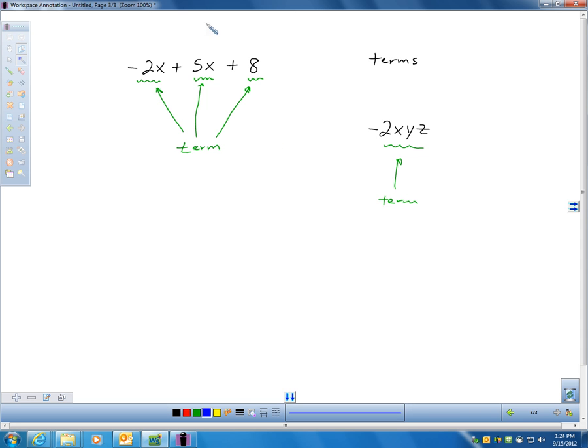Now, inside a term, there's another word we have to be familiar with, and that's called coefficient. So, what's a coefficient? A coefficient is a word that means a number leading a variable. So, here I have a coefficient, negative 2. Here's a coefficient, 5.